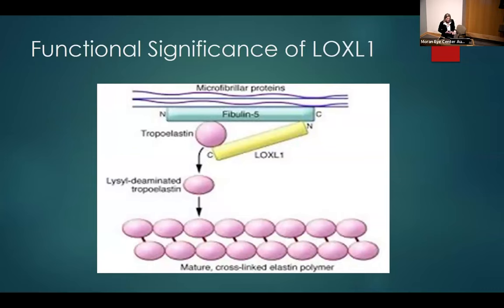What's LOXL1? A lot of focus has been put on LOXL1 because of work from Scandinavia and Finland linking it as a risk factor. LOXL1 is an enzyme that converts tropoelastin to elastin. Elastin is critical for extracellular matrix, ligaments, tissue, lung tissue, uterus tissue — and even in the eye, elastin is present. So could we use the UPDB to help determine possible systemic associations?